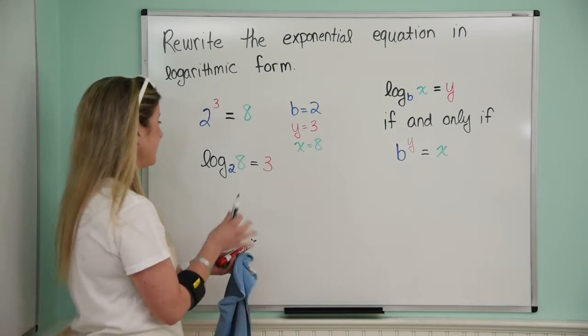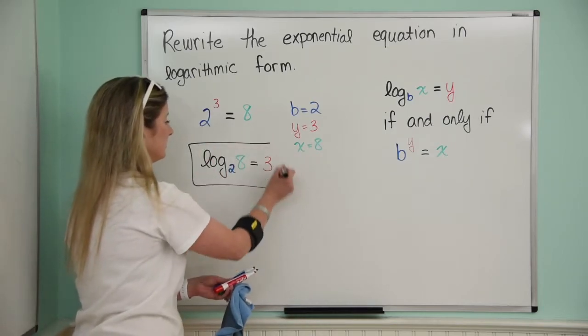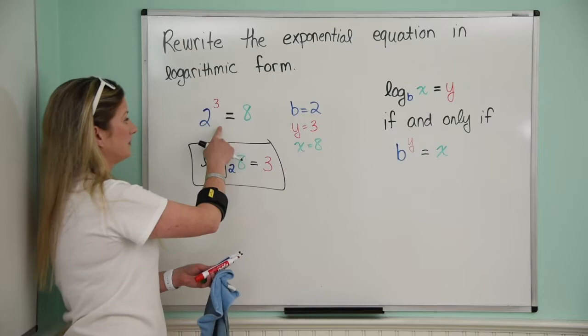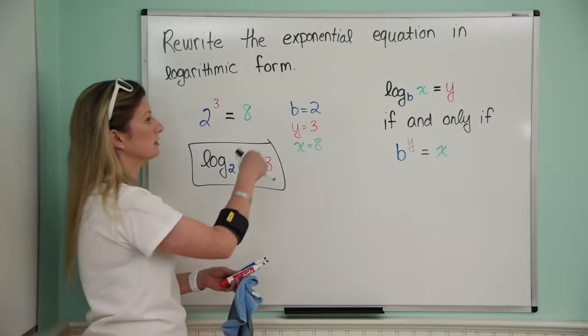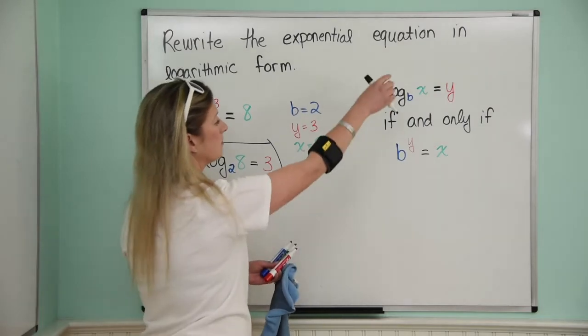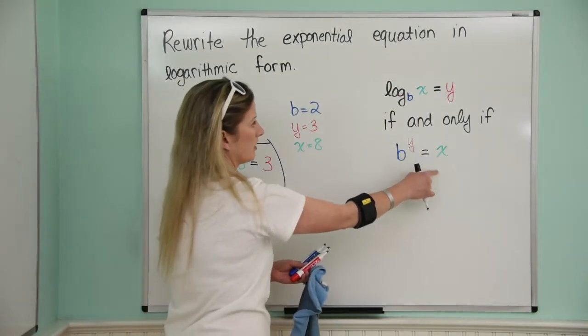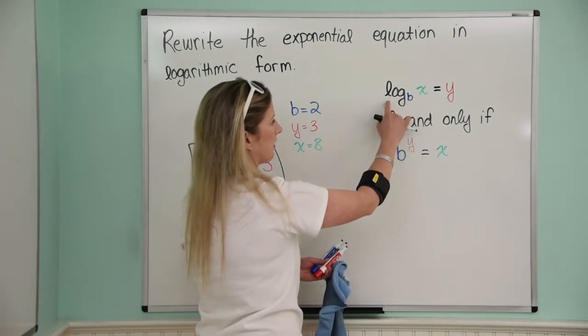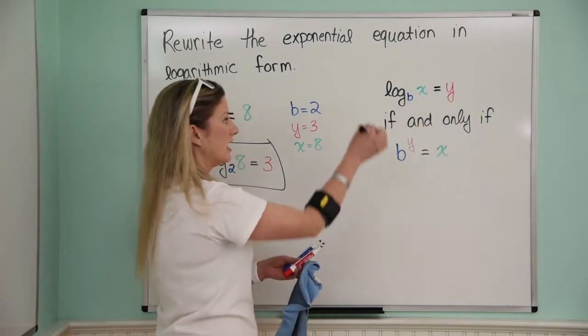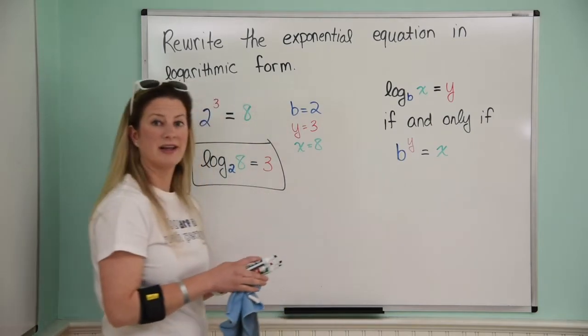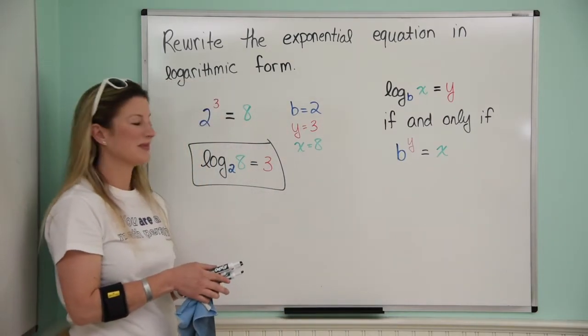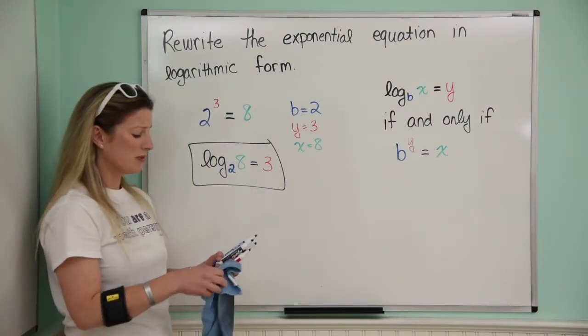So we're done. That was it. So here it is in exponential form, and here it is in logarithmic form, and all we did was we used a definition of a logarithm, and we said, all right, well, b to the y equals x, and we can rewrite that as log base b of x equals y, and so we just found out what's b, what's y, what's x, and then we substituted them appropriately, okay? So it's really awesome. All right, so nicely done. I hope the colors helped you with that.